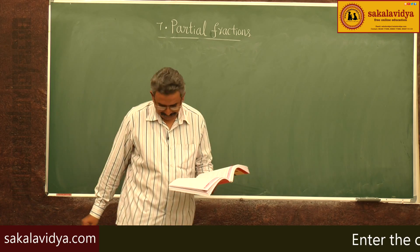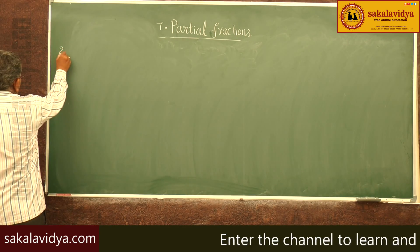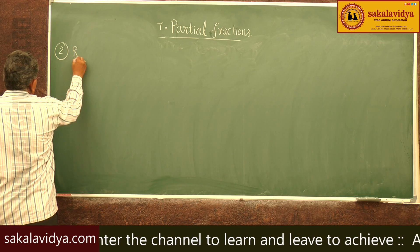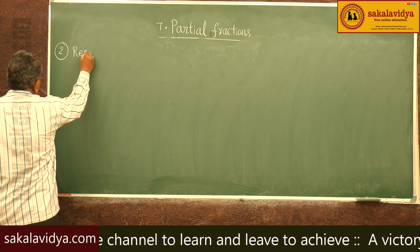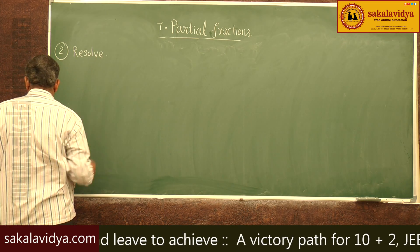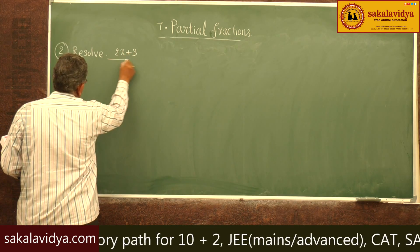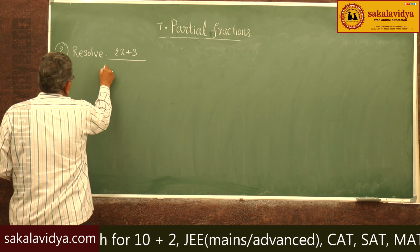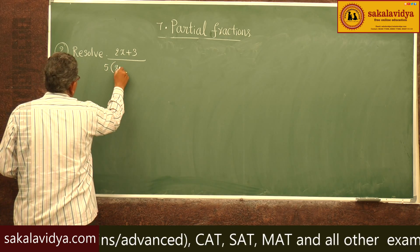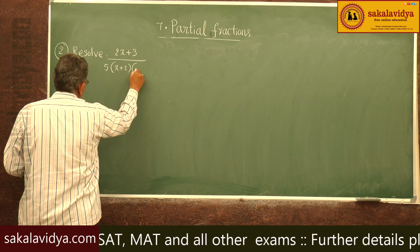Second problem: resolve (2x+3) divided by φ, multiplied by (x+2), into (2x+1), into partial fractions.